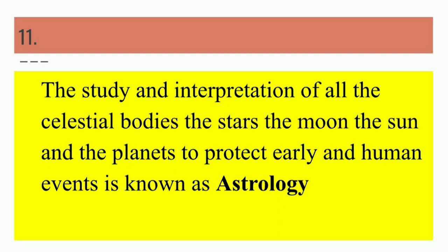Next is astrology. The study and interpretation of all the celestial bodies — the stars, the moon, the sun and the planets — to predict earthly and human events is known as astrology. This is basically studying human behavior in accordance with the stars, the moon, and all the celestial bodies. This is astrology.